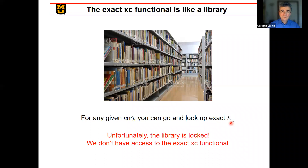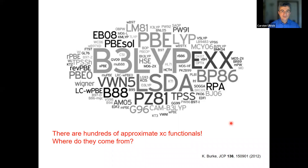Instead, we have to approximate. There are literally hundreds of exchange-correlation functionals developed over the years. The question is: where do these come from, what do they do, and how do we use them? We'll talk about a few today. You've heard already about LDA, LSDA, PBE. I'll say a few more words about those and then we go a little further — for example, we'll talk about B3LYP a little bit today.